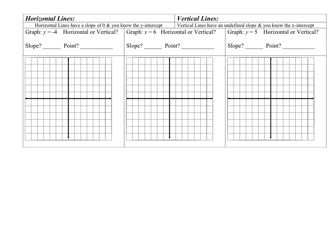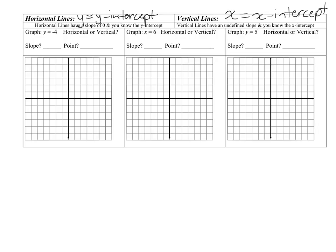Next we learned about horizontal and vertical lines. Horizontal lines have y-intercepts — if I draw a horizontal line it hits the y-axis, so the equation is in the form y equals the y-intercept, or any y-value along the line. Vertical lines go straight up and down and hit the x-axis, so their equation is in the form x equals the x-intercept. Horizontal lines have a slope of zero, and vertical lines have an undefined slope.